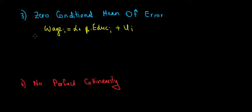Zero conditional means, so the expected value of the error terms, conditional on what? Conditional on the independent variables. The expected value of the error terms given the independent variable must be equal to zero. That's the math behind it.